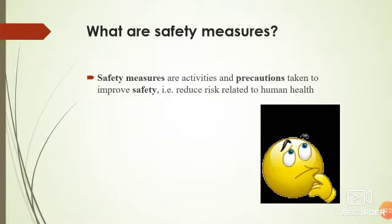So first of all, what are safety measures? Safety measures are the activities and precautions taken to improve safety, i.e., reduce risk related to human health. It is a term used to describe any precaution taken to increase the safe performance of a work, safety and protection from danger. It is a preventionary action — a precaution taken to increase safe performance when we work in the lab. The precautions we take while working in the lab are the safety measures.